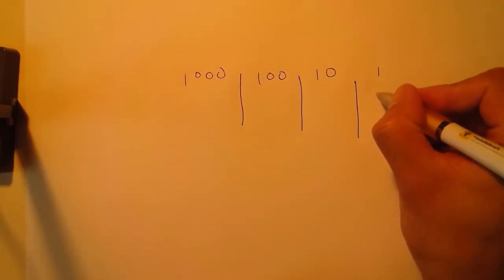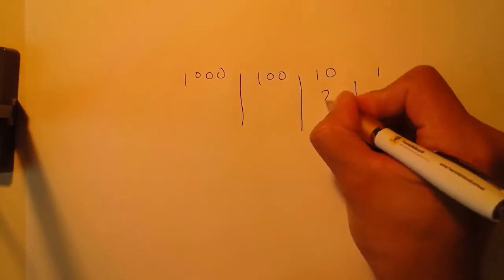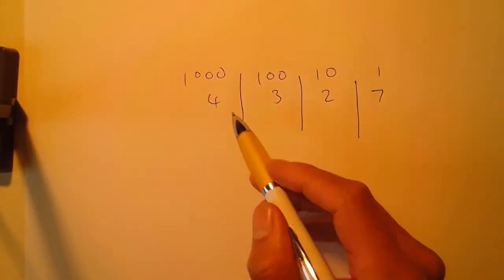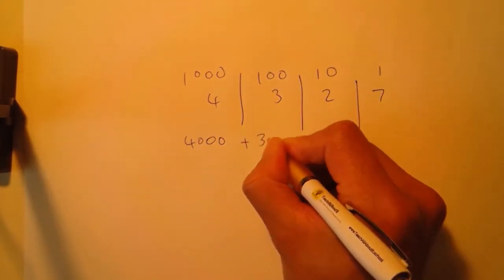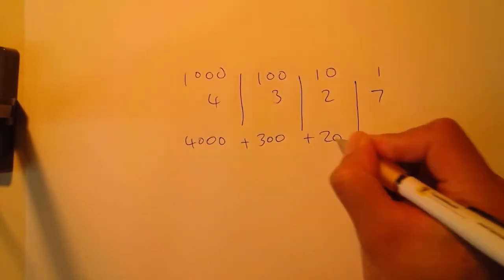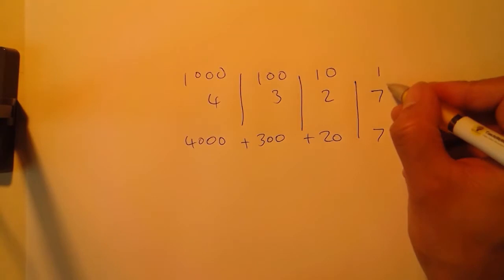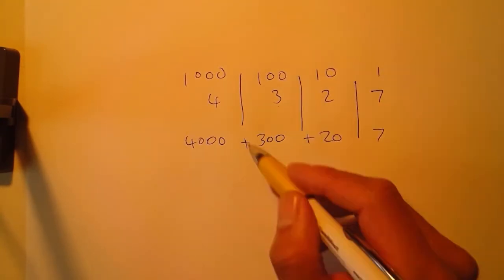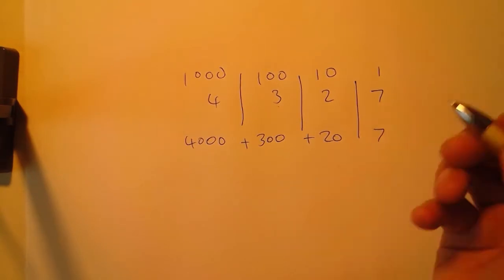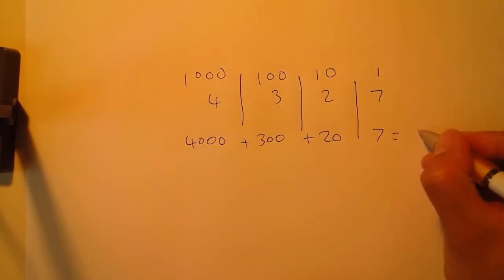What this means is if we have for example this number here, what we're actually doing is we're saying we've got four thousands plus three hundred plus twenty plus seven. We can just read that as four thousand three hundred and twenty seven.